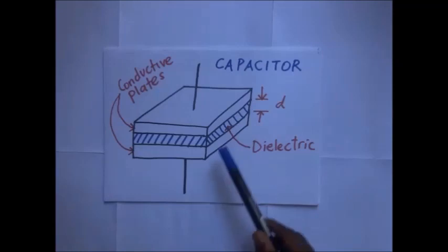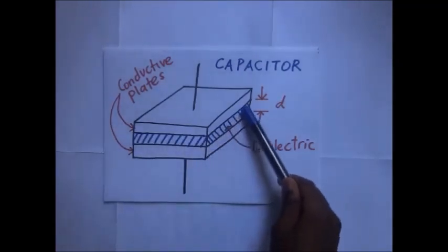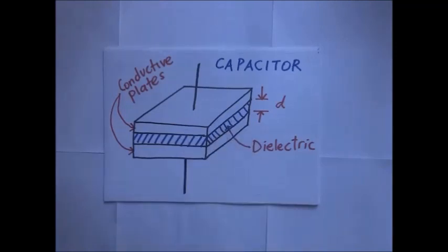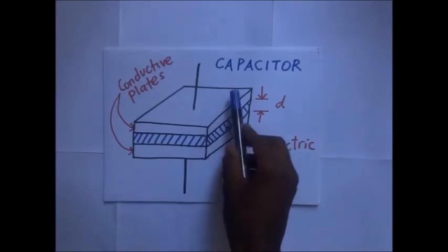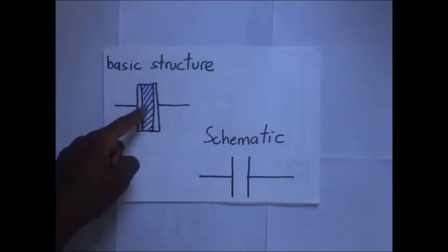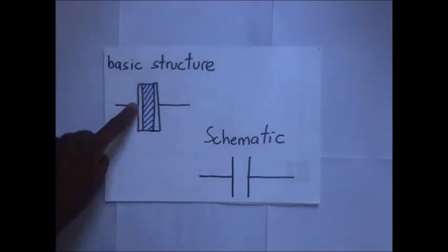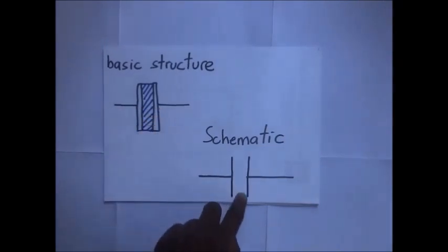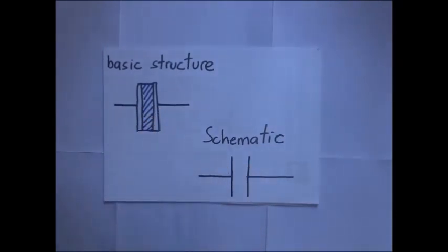In between the two plates is an insulator, and this insulator is what we are calling the dielectric. The dielectric material can either be air, paper, or oil. The metal plates can be square, circular, rectangular, or cylindrical, depending on the application and the voltage rating. This is the cross-sectional view of the basic structure of the capacitor — the dielectric and the two plates — and this is the schematic symbol used when drawing it in an electric circuit.